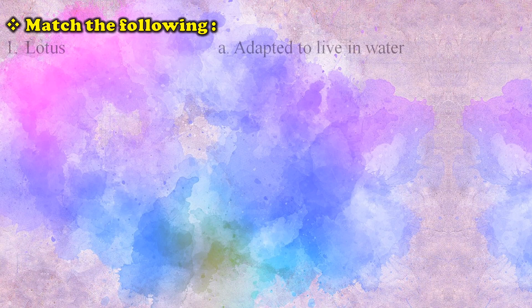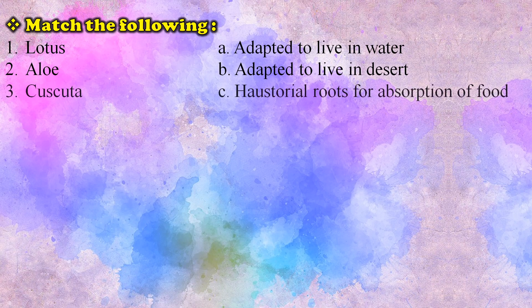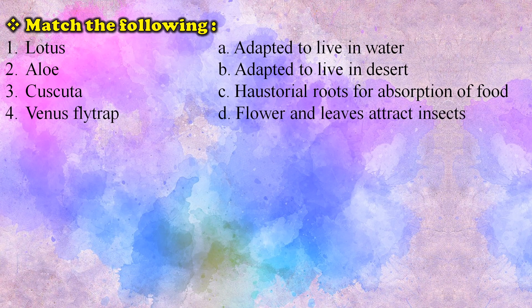Match the following. Lotus — adapted to live in water. Aloe — adapted to live in desert. Cuscuta — forestry roots for absorption of food. Venus flytrap — flower and leaves attract insects.